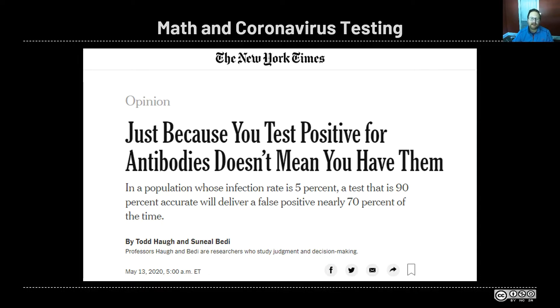In the subheading it says, in a population whose infection rate is 5%, a test that is 90% accurate will deliver a false positive nearly 70% of the time. That's a lot to unpack and that's what we're going to focus on today. This is by Todd Howell and Sunil Betty, researchers who study judgment and decision making.